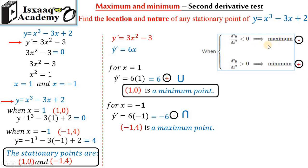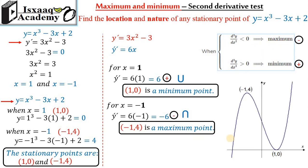The critical point is negative one, four and the maximum point is two, eight. The graph shows a minimum of zero and maximum of eight. So the minimum point is negative one, four and the maximum point is two, eight. Thank you.